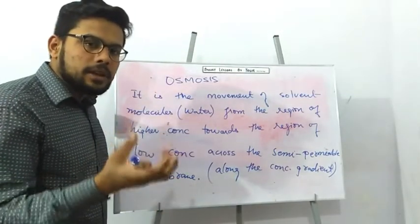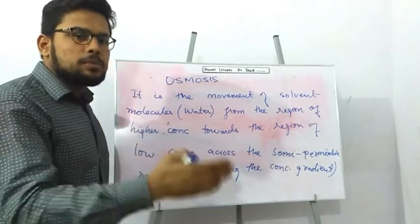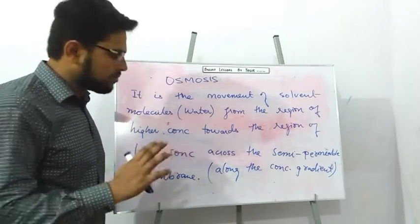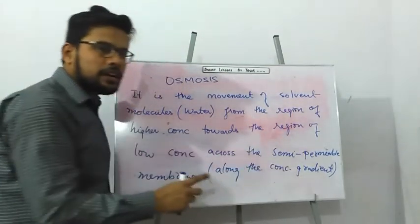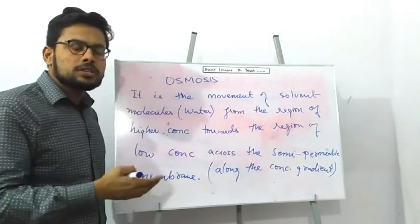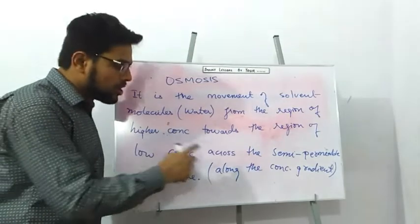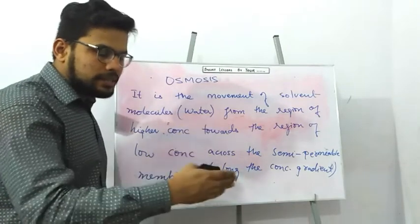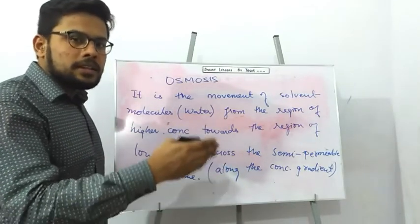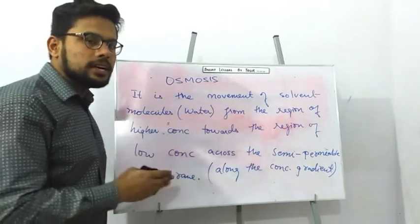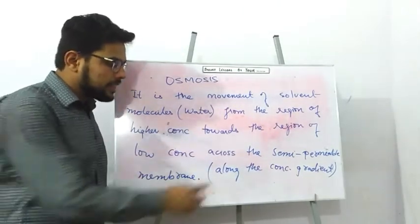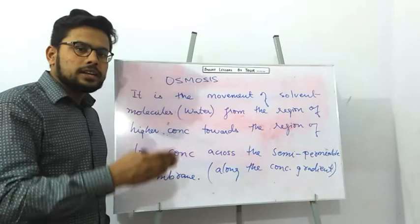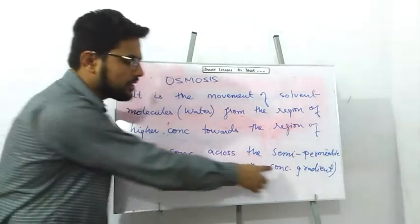A semipermeable membrane allows some substances to pass through but does not allow big or charged substances to pass through. Along the concentration gradient means movement from high to low: one side of the plasma membrane has water in high quantity and the other side has water in low quantity, creating a concentration gradient.